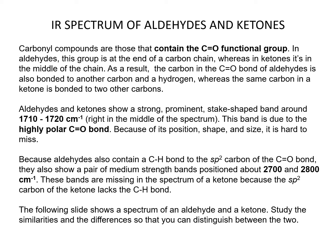Carbonyl compounds contain the C=O functional group. In aldehydes, this group is at the end of the carbon chain, whereas in ketones it is in the middle. Aldehydes and ketones show a strong prominent stake-shape band around 1710 to 1720 centimeters to the minus one, due to the highly polar carbon-oxygen bond. Because aldehydes also contain a C-H bond to the SP2 carbon of the C=O bond, they also show a pair of medium strength bands at about 2700 and 2800 centimeters to the minus one. These bands are missing in the spectrum of a ketone because the SP2 carbon of the ketone lacks the C-H bond.